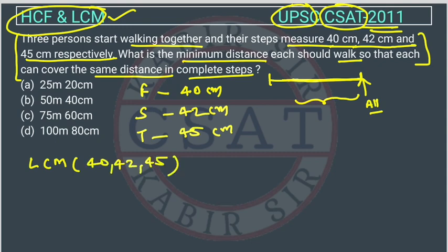Once we identify this as an LCM problem, it becomes very easy. The challenge is recognizing whether the question is from puzzles or from HCF and LCM. Now let's find the LCM of 40, 42, and 45 by making their prime factorizations.